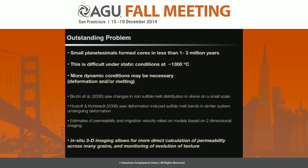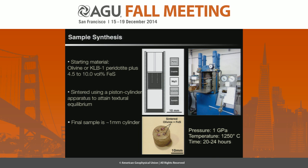We are also doing this in-situ, so we're able to monitor the development of texture as we induce more and more deformation. The samples were synthesized ahead of time in the piston cylinder lab at RPI. We started with either olivine or a peridotite silicate sample mixed with FeS, which represents the metallic portion of the core, sintered at about 1 GPa and 1,250 degrees, where the sulfide component is molten and the silicate component is solid, to develop an equilibrium microtexture. We end up with small cylinders about a millimeter in diameter as our starting material.